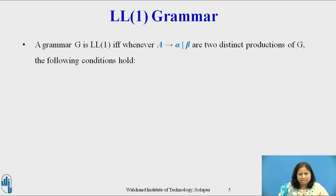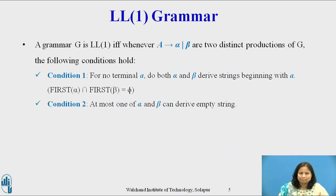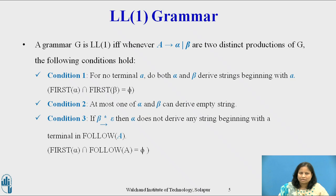A grammar G is LL1 if and only if, whenever A derives alpha or beta are two distinct productions of G, the following conditions hold. Condition 1: for no terminal a do both alpha and beta derive strings beginning with a, that is first(alpha) ∩ first(beta) = φ. Condition 2: at most one of alpha and beta can derive the empty string. Condition 3: if beta derives epsilon in zero or more steps, then alpha does not derive any string beginning with a terminal in follow(A), that is first(alpha) ∩ follow(A) = φ.